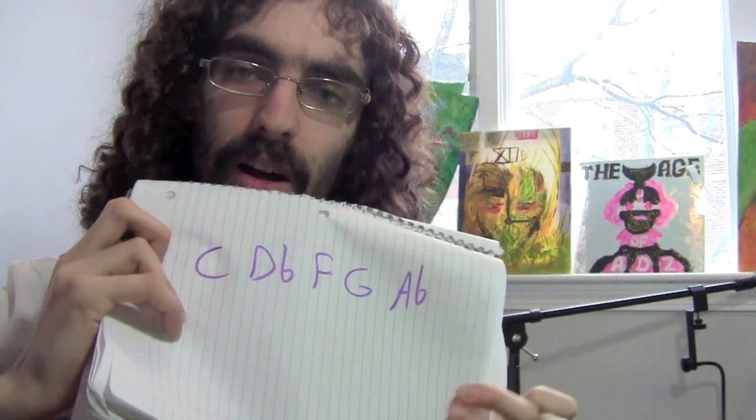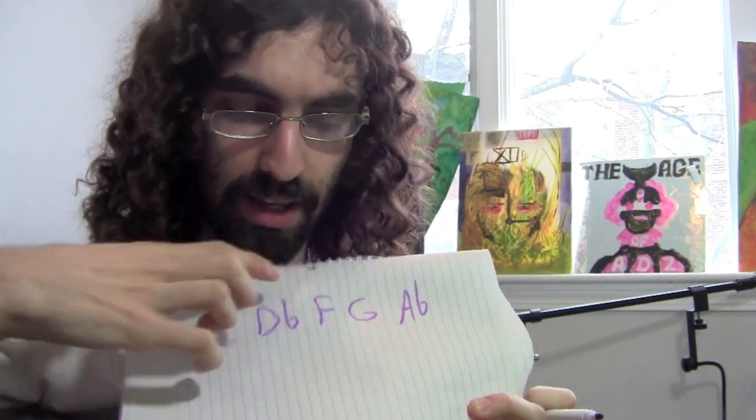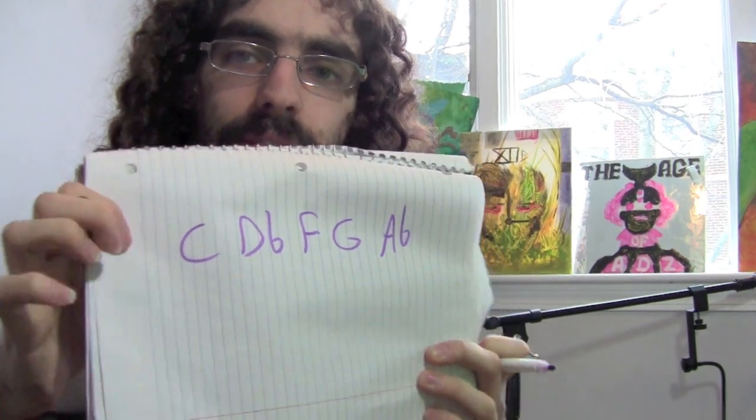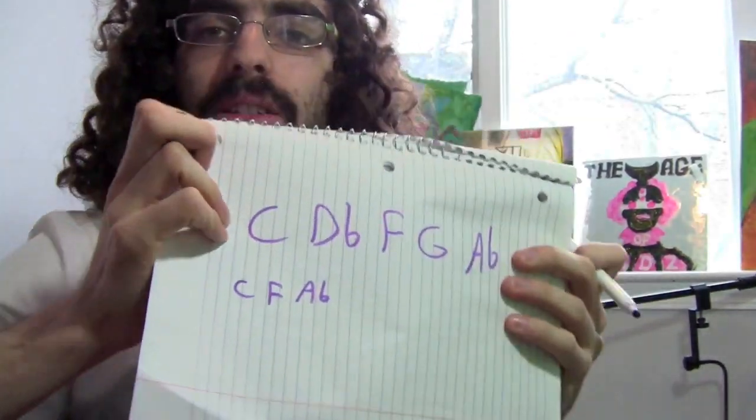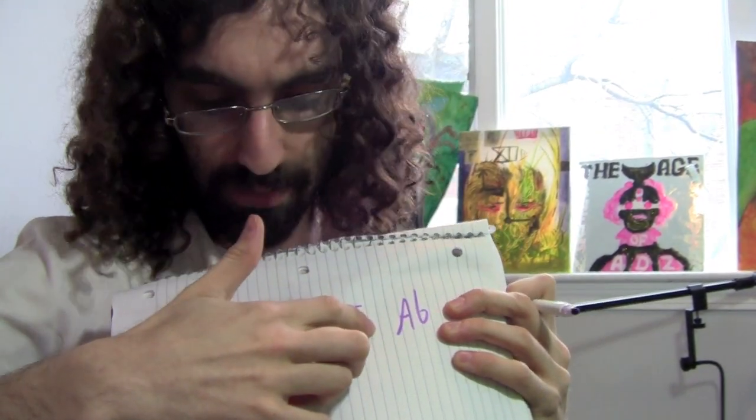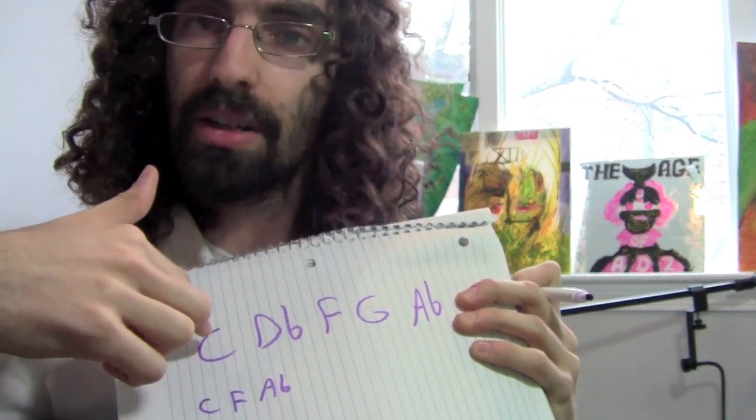For example, our first chord will be C, F, A-flat. I'm going to write that down: C, F, A-flat. Our next chord will be D-flat, G, then we'll skip to C. So D-flat, G, C.